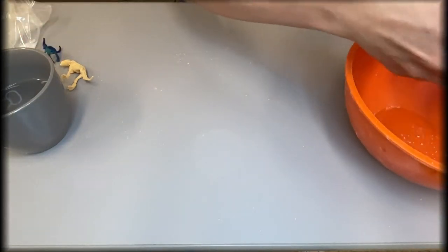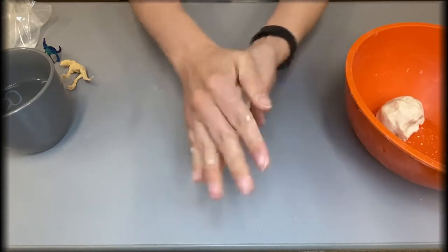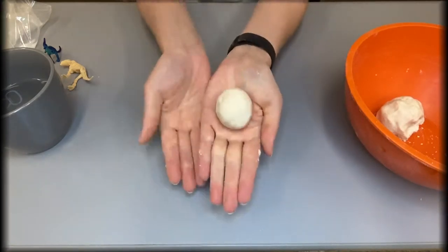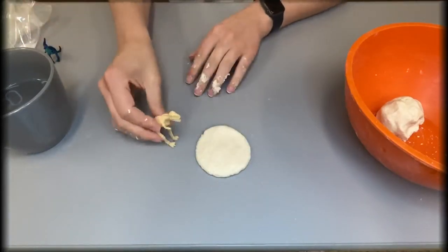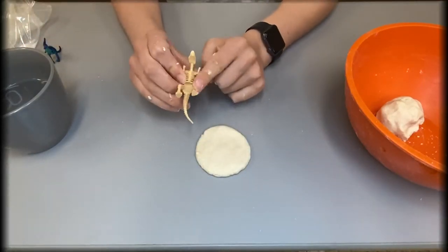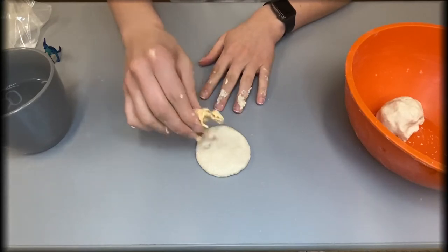You're going to repeat the process with the three other sections of dough that you've separated. Go ahead and try to recreate different types of fossils such as I did, using the feet of the dinosaur to make an imprint on the dough to replicate a trace fossil.